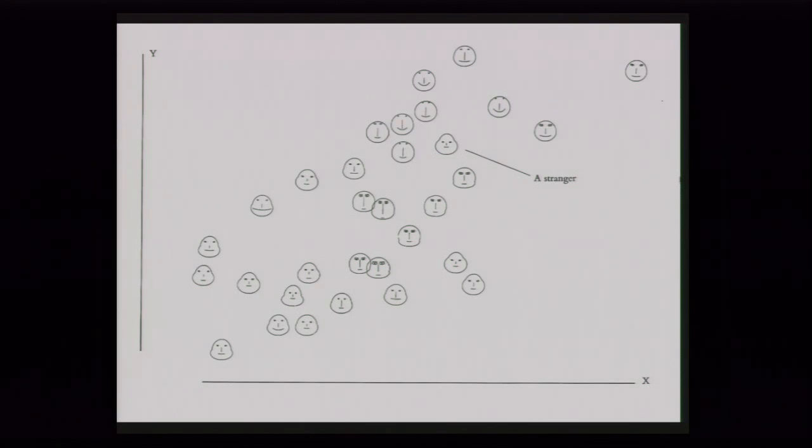Another one: looking at Chernoff faces. Chernoff faces were suggested in the late 70s as a visualization technique taking the idea that it's really difficult to look at multivariate information on a plot, but we're really good at reading faces. Even without thinking about it, by looking at different facial features — eyes, length of the nose, shape of the mouth — we very quickly can read what's happening. This is an example from Tufte's book where, clearly, this one is a stranger amongst the others.